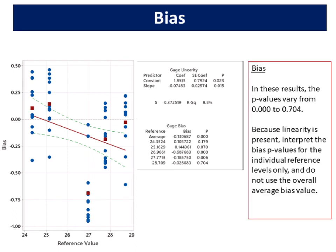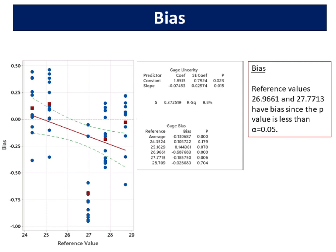Bias: In these results, the p-values vary from 0.000 to 0.704. Because linearity is present, interpret the bias p-values for the individual reference levels only, and do not use the overall average bias value. Reference values 26.9661 and 27.7713 have bias since the p-value is less than alpha equals 0.05.